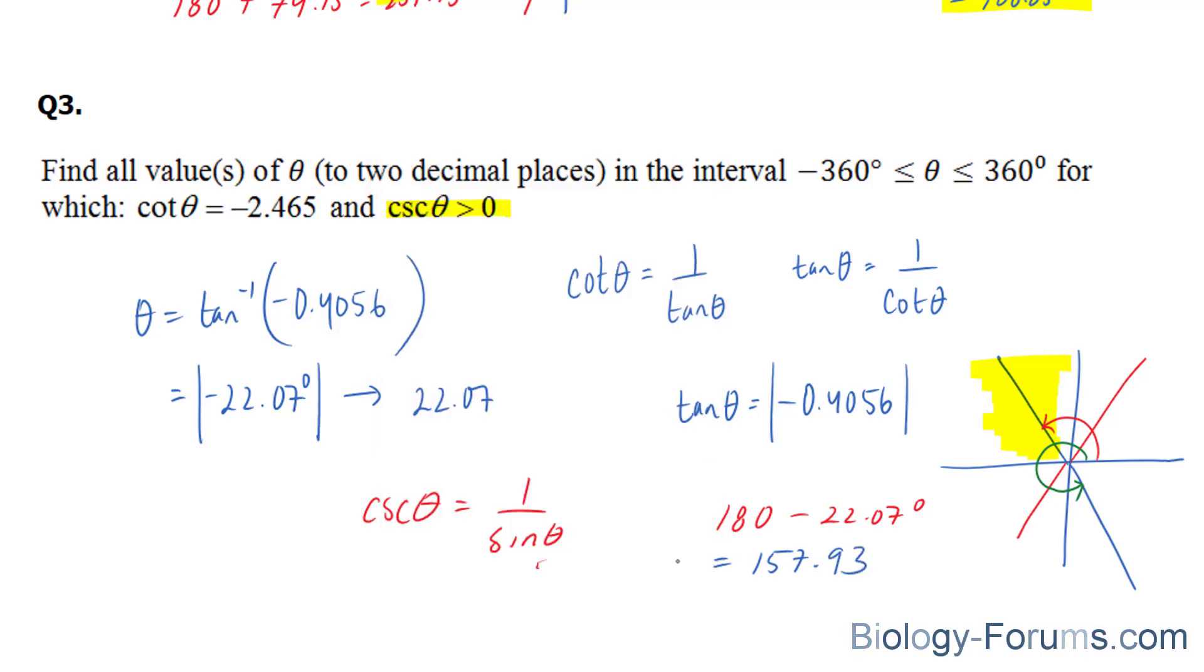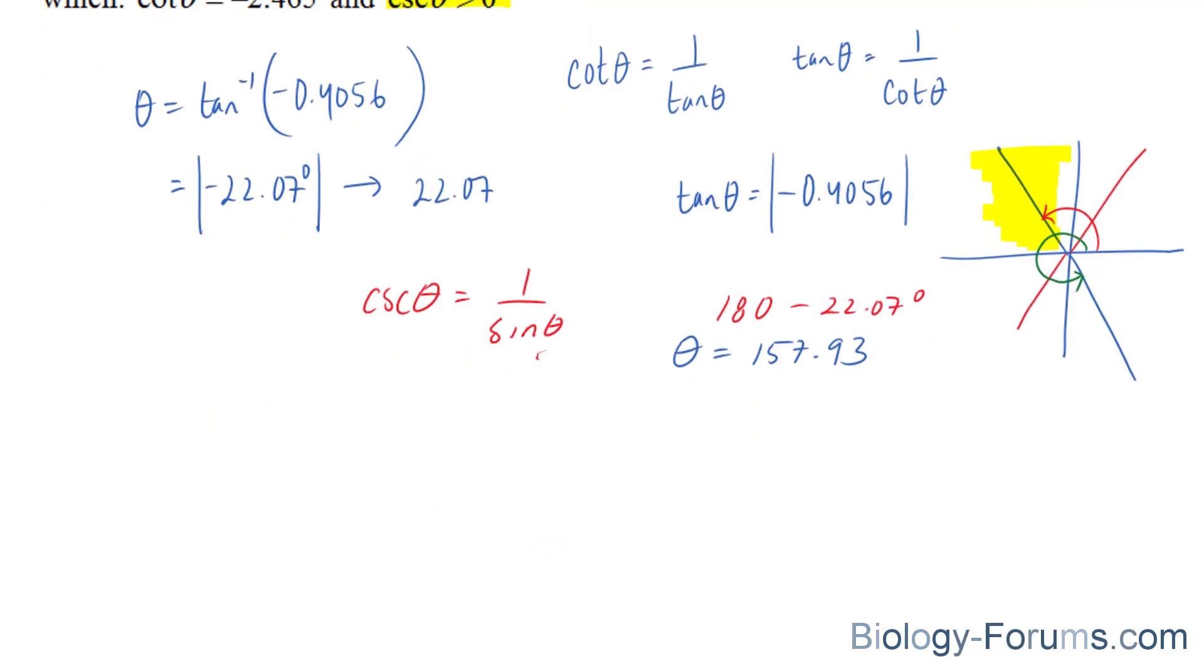180 minus 22.07 is 157.93 degrees. So that's one of the angles that we're looking for.